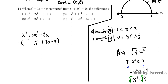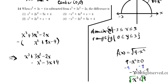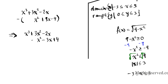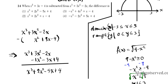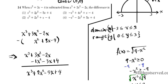Distributing the minus sign to all three terms in the subtracted polynomial changes their signs: we get x³ + 3x² − 2x, then minus x² minus 3x plus 4. Combining like terms: x³, then (3 − 1)x² = 2x², then (−2 − 3)x = −5x, plus 4. So our answer is option number 1.